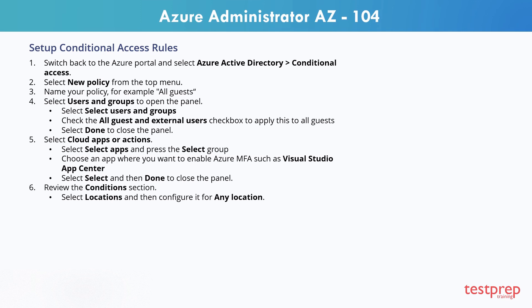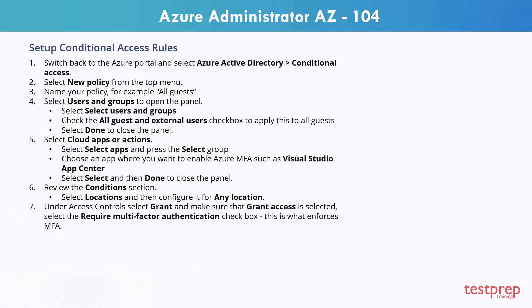Step 6, review the conditions section and select locations, then configure it for any location. Step 7, under access controls select grant, make sure that grant access is selected, and check the require multi-factor authentication checkbox — this is what enforces MFA. Step 8, select done to close the window. Step 9, set enable policy to on. Step 10, select create to create the policy.